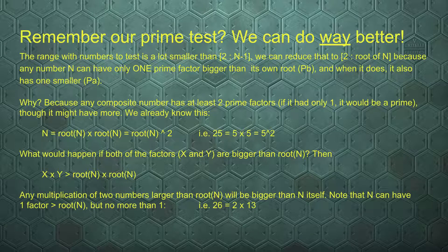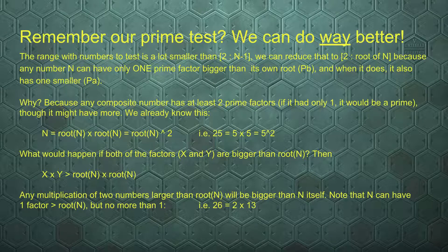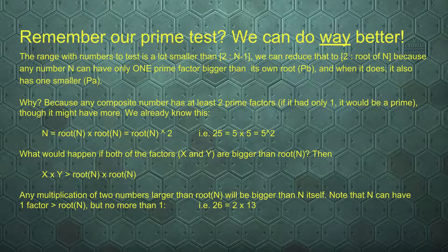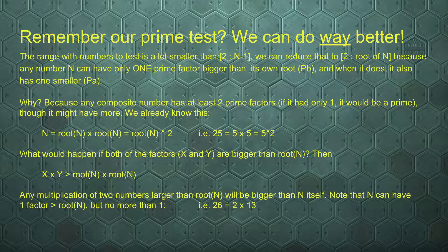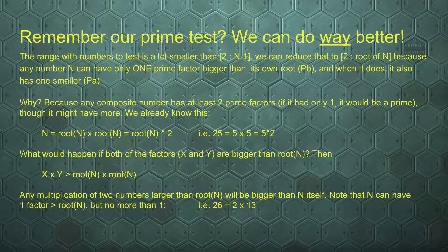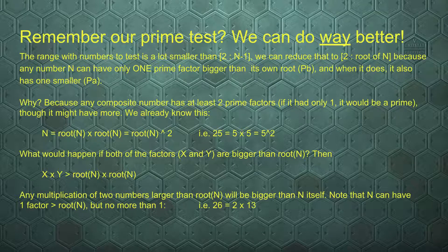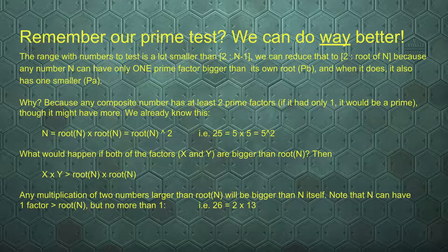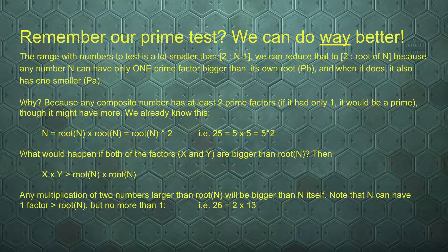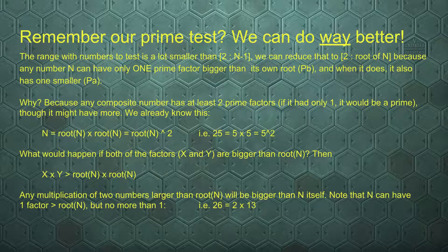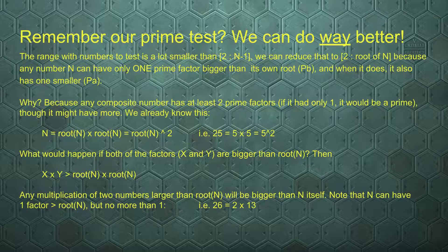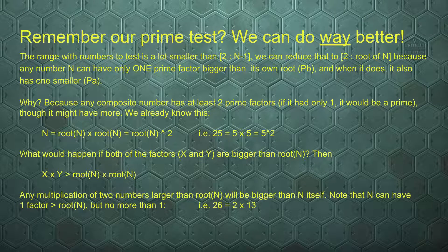Now let's take a hypothetical look at when we multiply two numbers that are bigger than the root. Say we have x and y which are 6 and 7, or 5 and 6, if one is the root and the other is bigger. Then the multiplication of x and y will always be bigger than the multiplication of root n and root n. Any multiplication of two numbers larger than root n will be bigger than n itself. Note that n can have one factor bigger than its root, but no more than one.